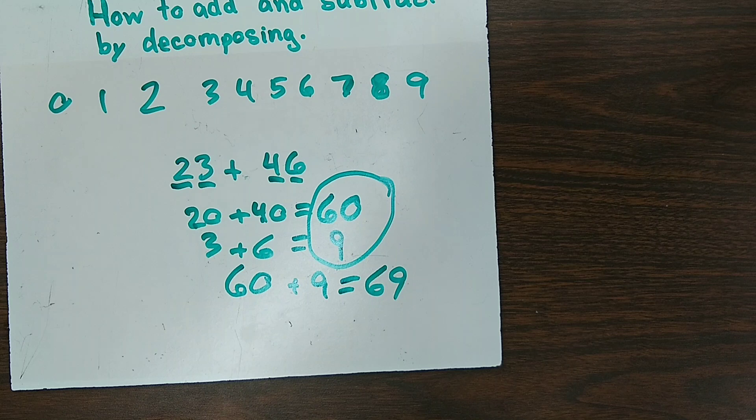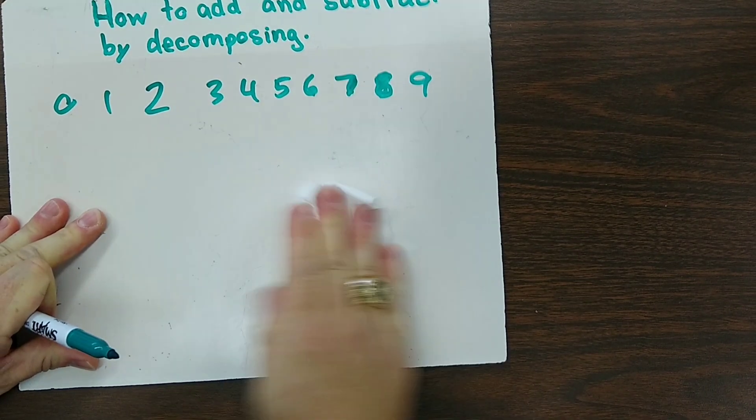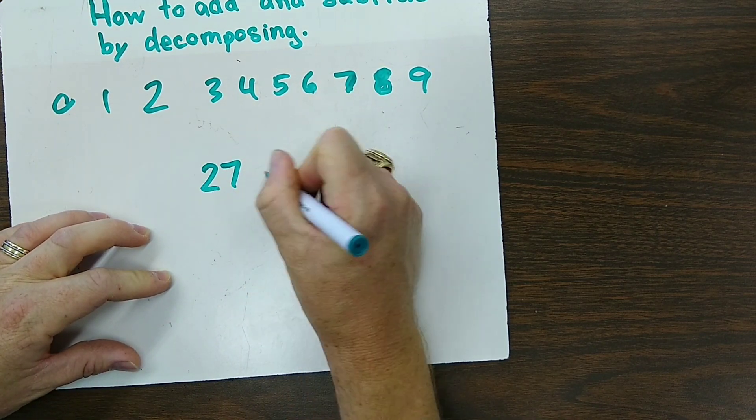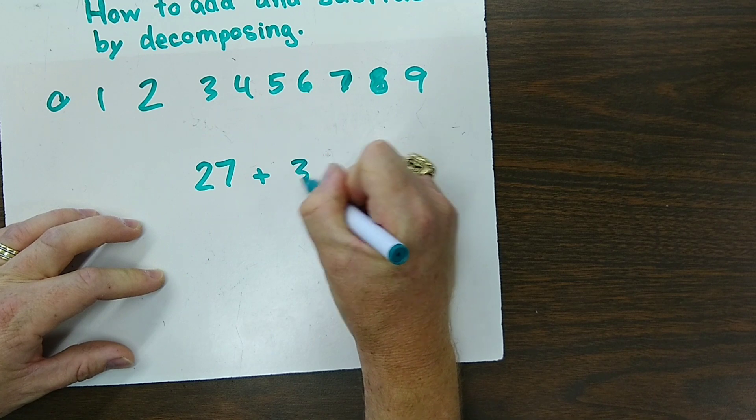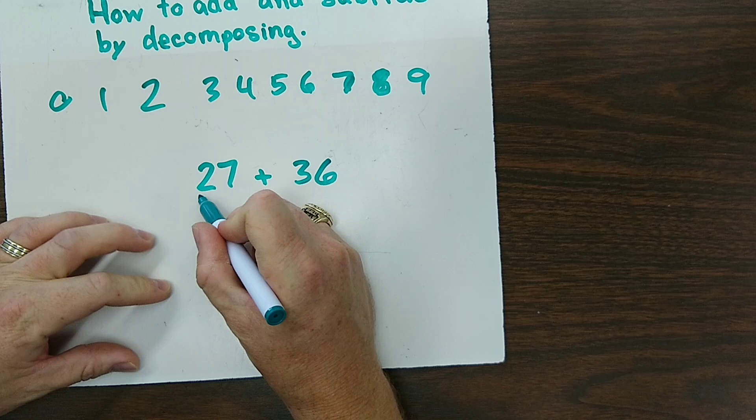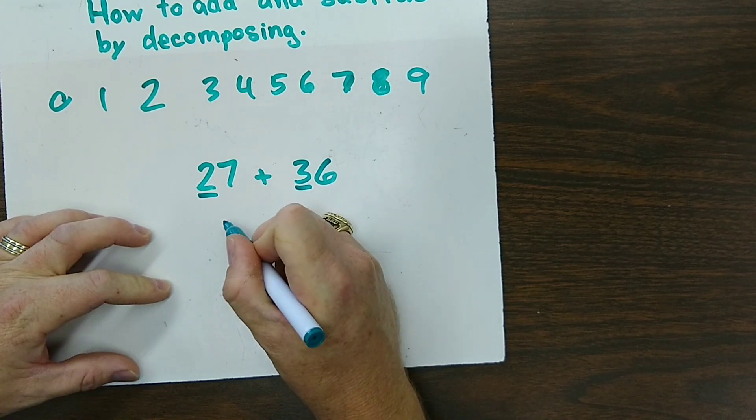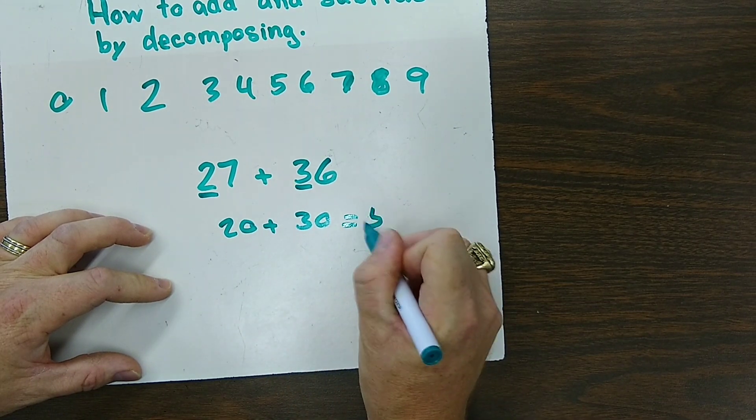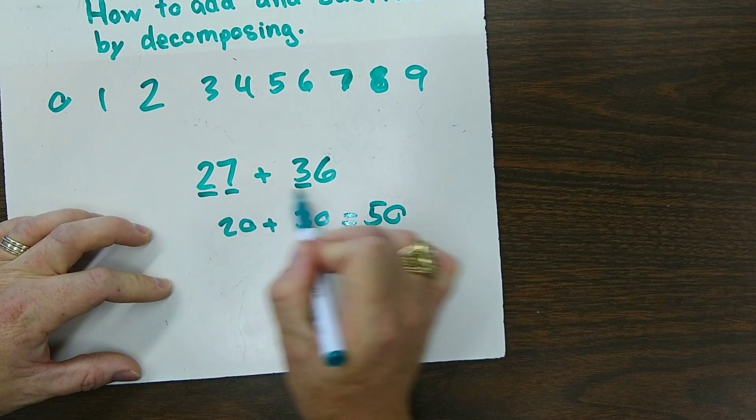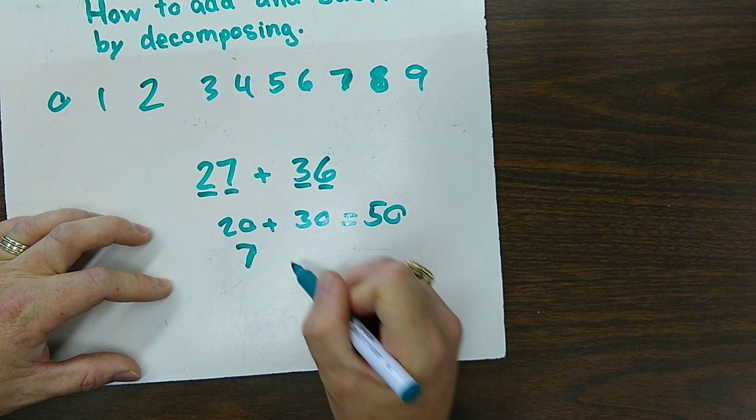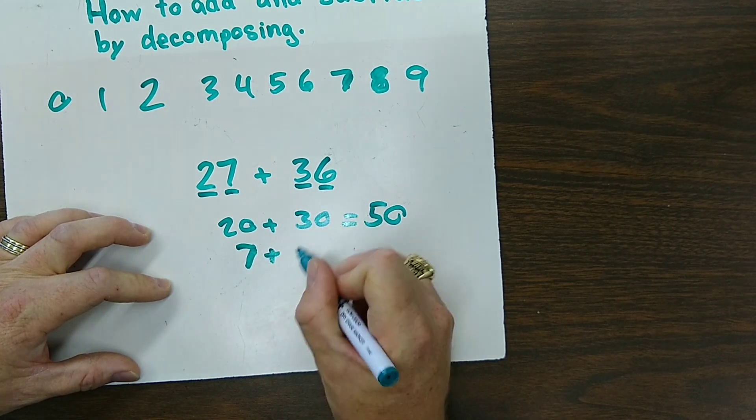Now I'll show you how to do one with regrouping. So let's say we have 27 plus 36. Same thing. Let's add our values of our tens place: 20 plus 30, and that gives you 50. And now let's add our ones place. The value of the 7 is 7 because it's only 7 ones. The value of the 6 is 6 because it's 6 ones.